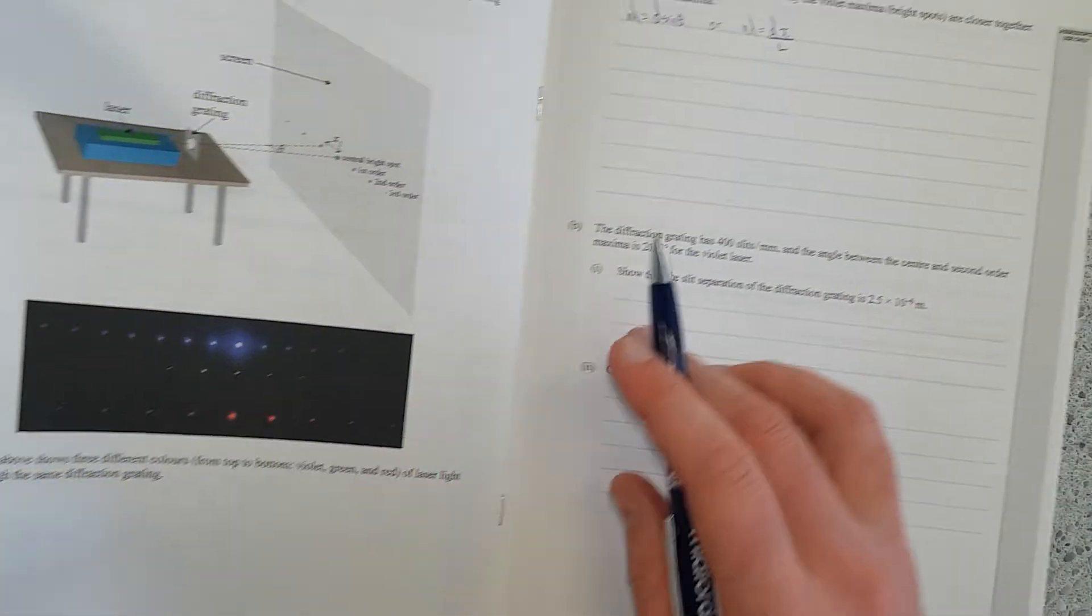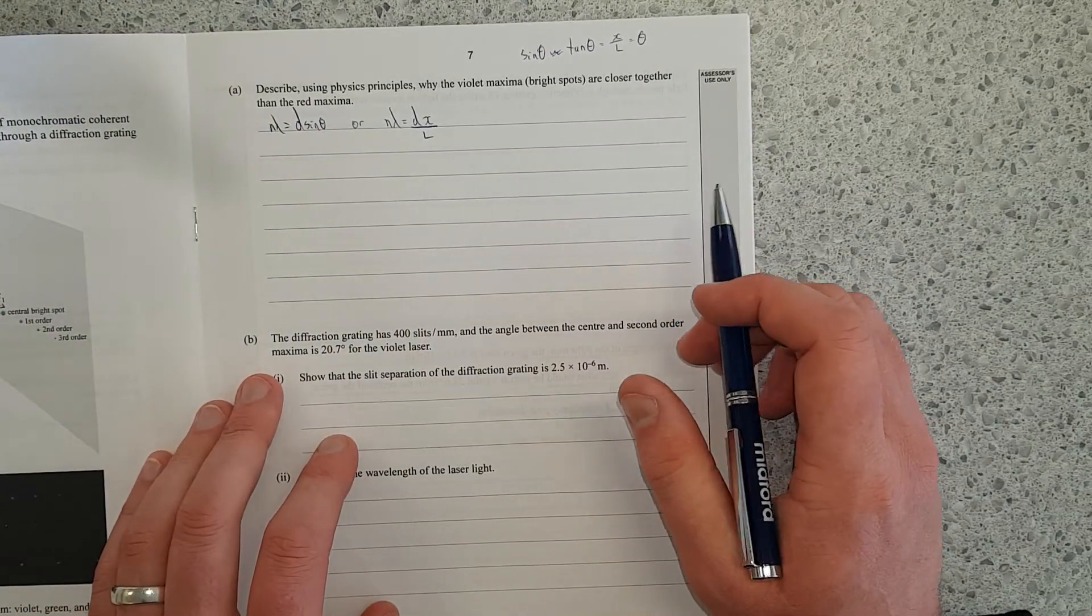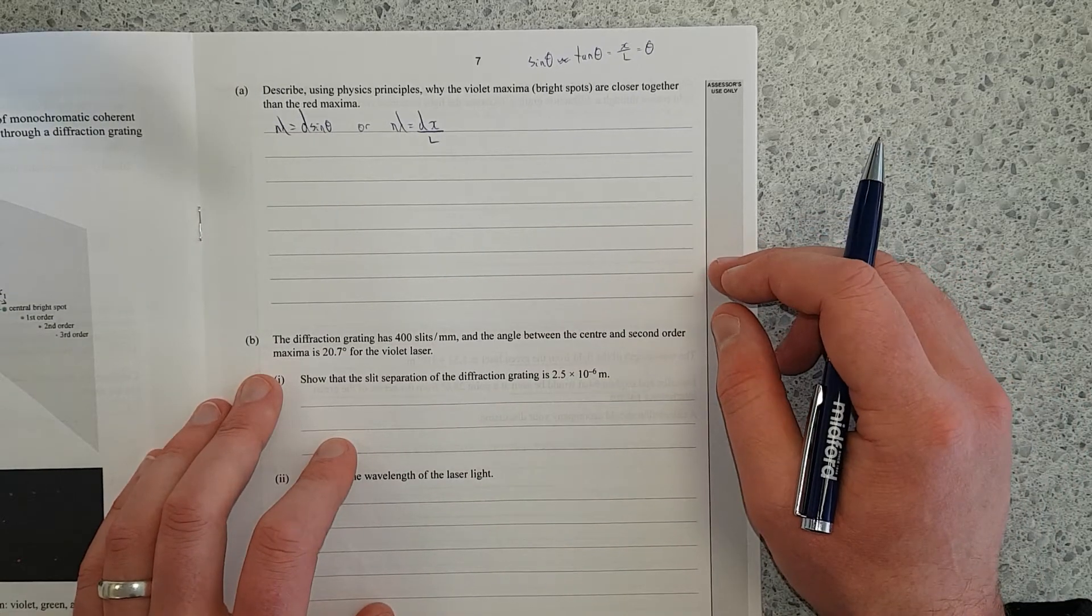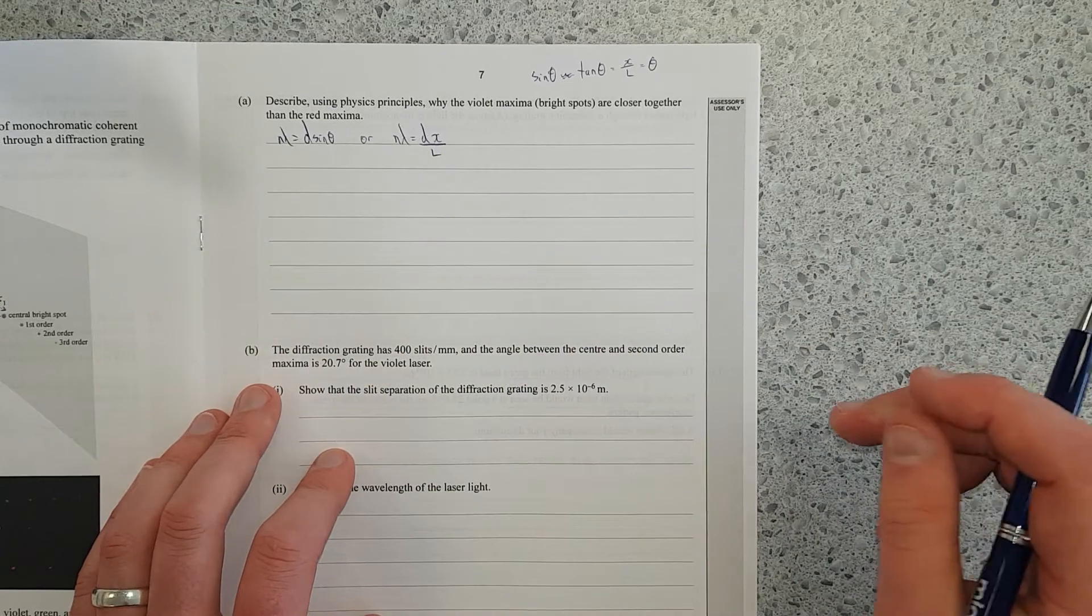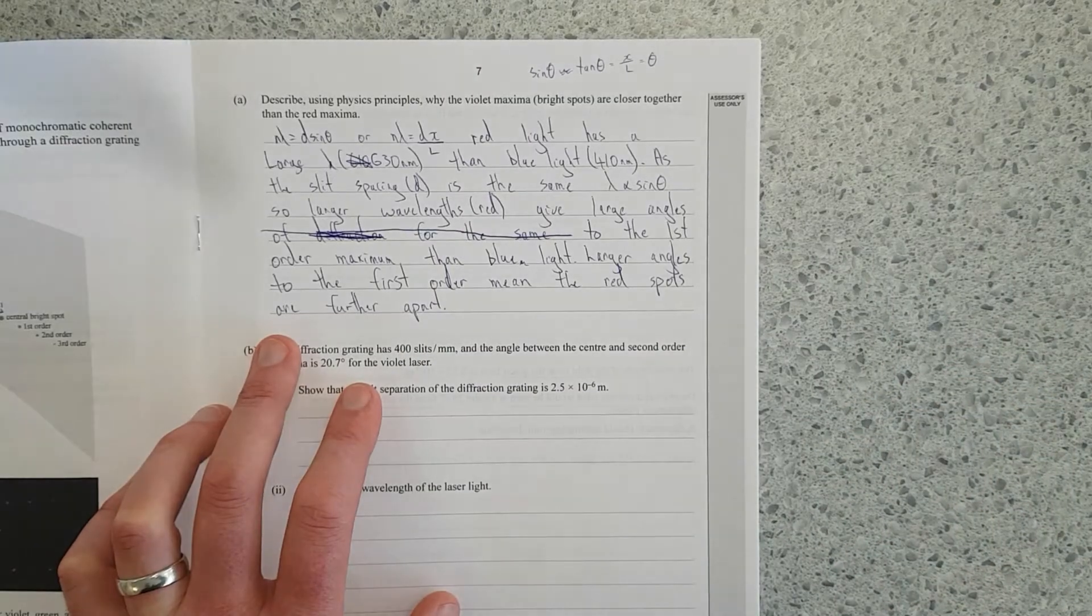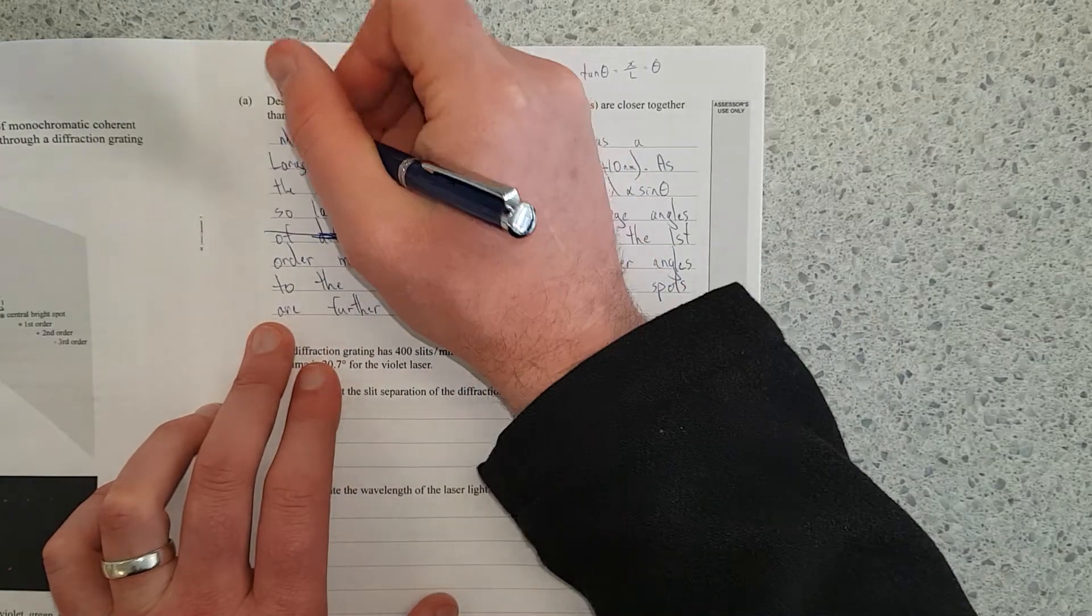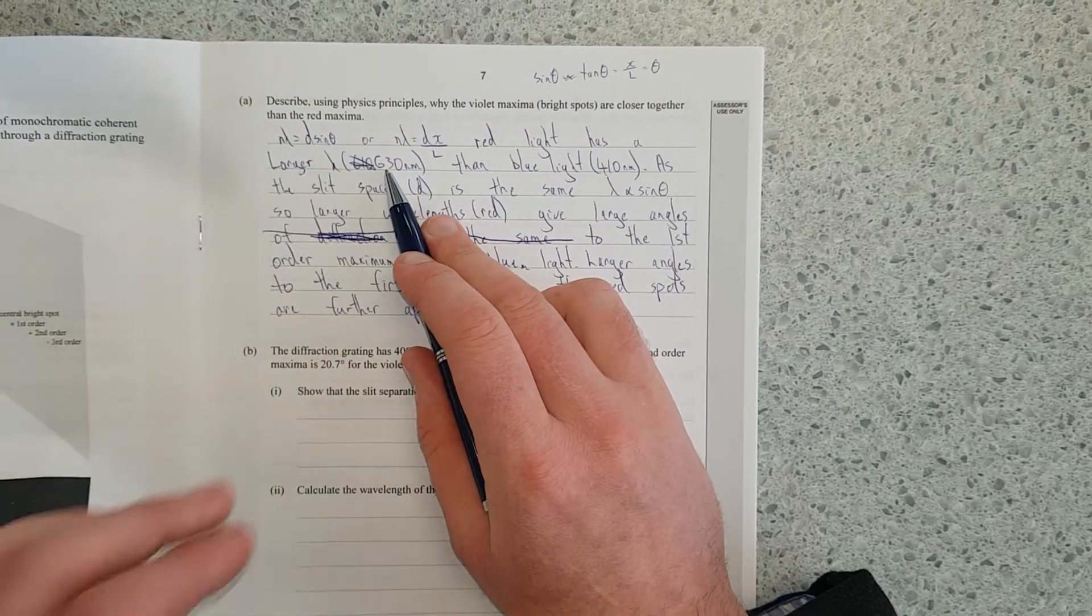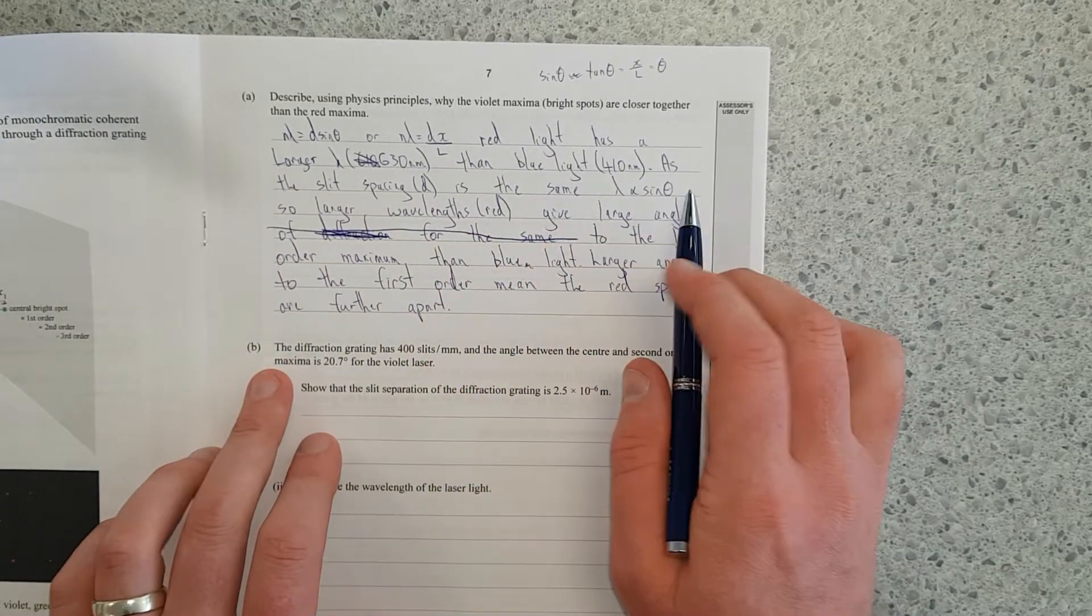So violet has a shorter wavelength than red light. Red light has a wavelength of about 610 nanometers. Violet has a wavelength of about 400 nanometers, plus or minus like 30, depends. I think blue lasers is like 410. So I'll pause this and I'll try and write a coherent answer and then I'll discuss.